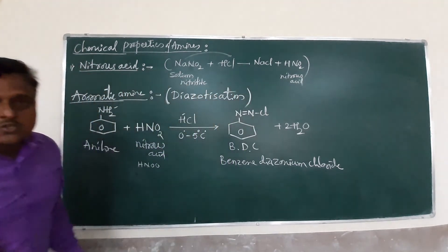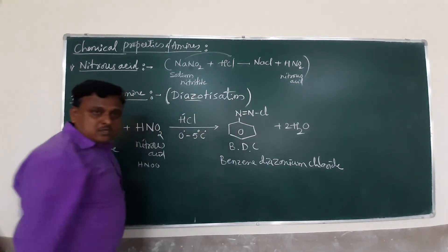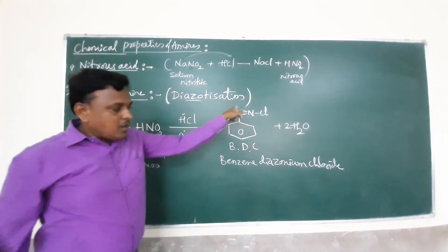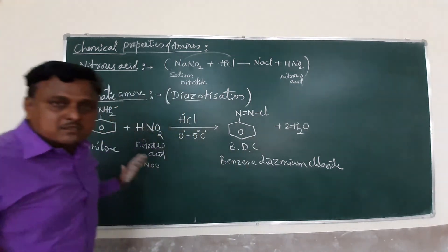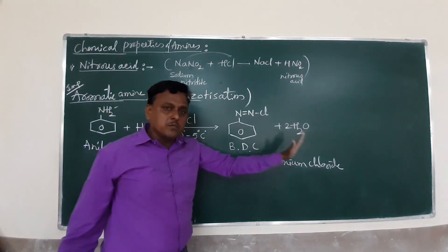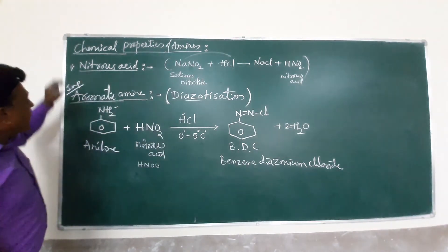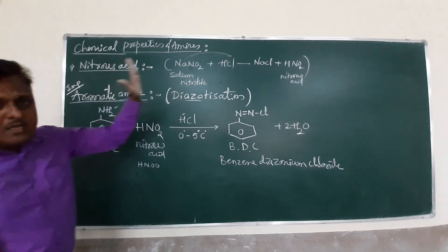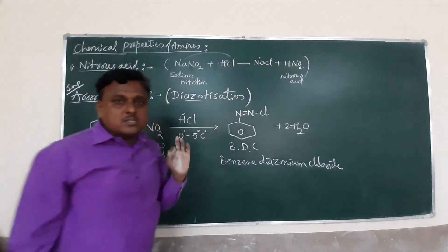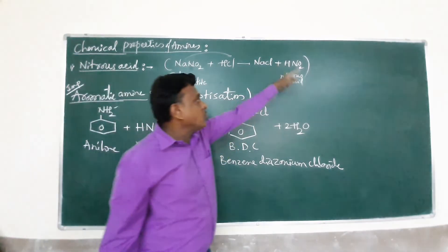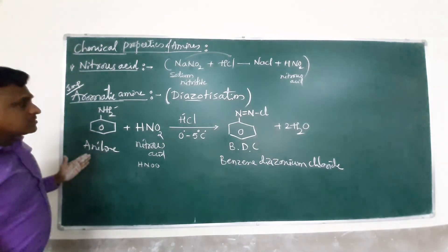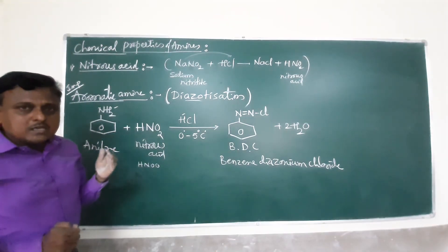Diazotization — 'azo' means N=N. This reaction is called diazotization. Exams often ask: explain the diazotization reaction, or how to form BDC, or how to form benzene diazonium chloride. The answer: aniline reacts with nitrous acid in the presence of HCl at 0–5°C to form benzene diazonium chloride. Note: nitrous acid is HNO2, not HNO3 — HNO3 is nitric acid. We will continue the chemical properties in the next videos. Thank you.